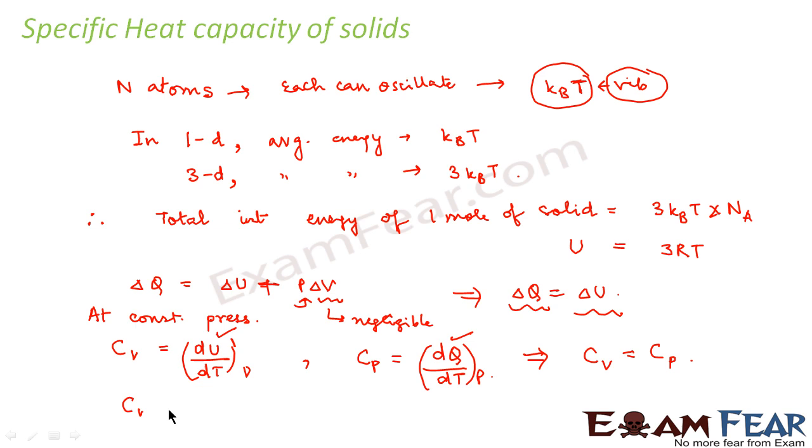So what will be the value of cv? That is du by dt. In this case U is equal to 3RT, so this will be 3R. So in case of solids, cp is equal to cv is equal to 3R. This is the relation between the specific heat capacities of solids.